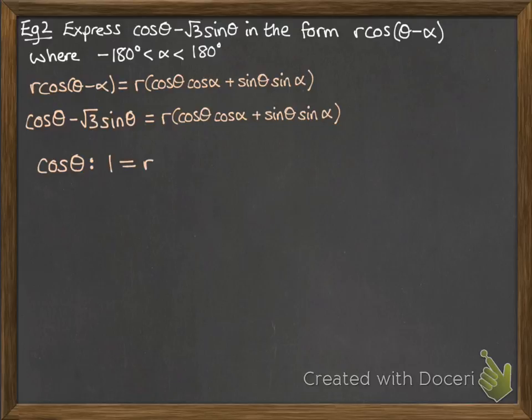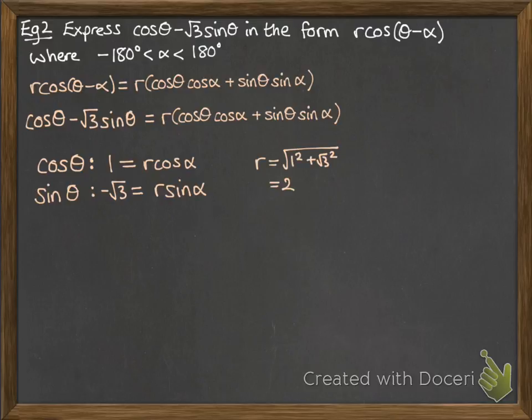Now comparing the coefficients, we get these. So our cos theta, we've got 1 on the left-hand side, r cos alpha on the right-hand side. And for sine theta, don't forget that that negative gets included as well. So it's negative root 3 is the coefficient of sine theta on the left-hand side and r sine alpha on the right-hand side. r is 2.